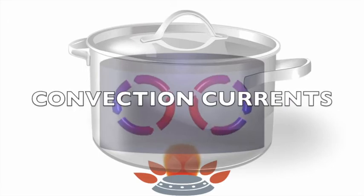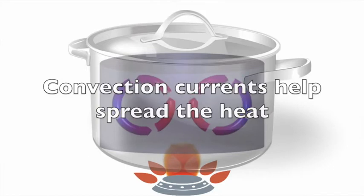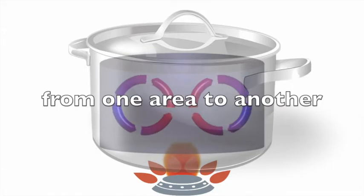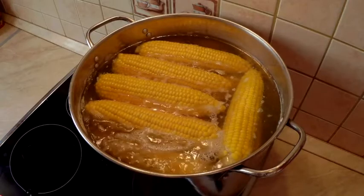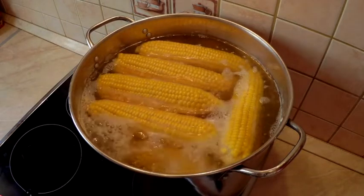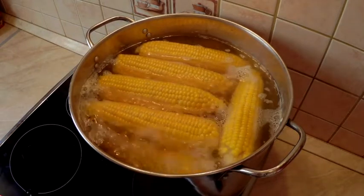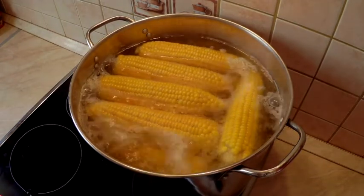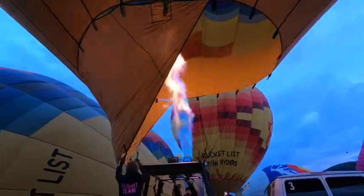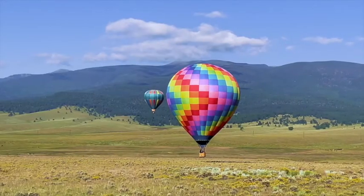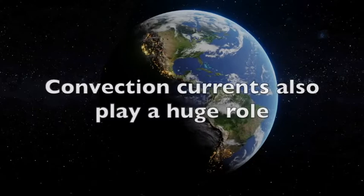This is called convection currents. Convection currents help spread the heat from one area to another. You probably see many examples of convection every day. A pot of water on a stove is one example. Convection is the reason that air at the top of a room is warmer than the air at the bottom—it's because hot air is less dense and rises. Hot air balloons use convection to fly.